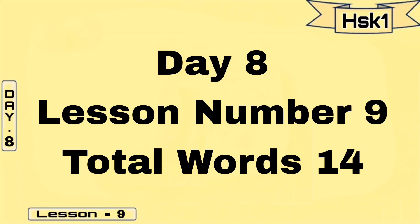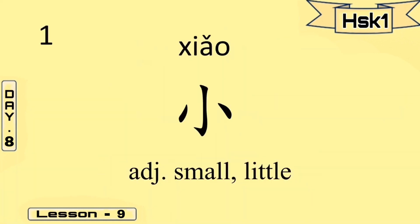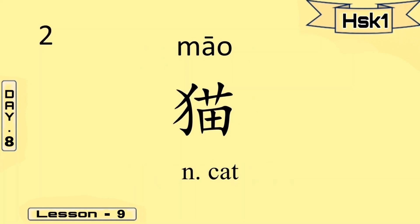Welcome to revision session day. Today we're going to learn lesson number nine, which includes a total of 14 new words. Our first word is xiao, xiao — that means small or a little. The second one is mau, mau — that means a cat.